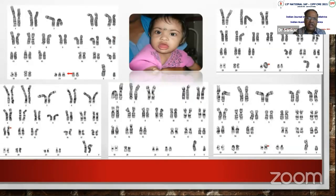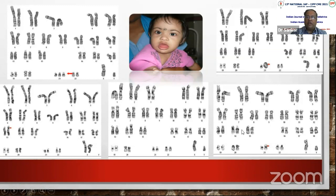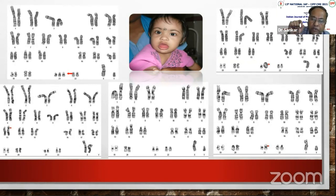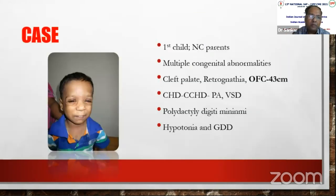While any pediatrician can clinically diagnose Down syndrome, karyotyping reveals important distinctions. There are various types of chromosomal abnormality: classical trisomy 21, non-disjunction trisomy 21, 13;21 translocation, 14;21 translocation, 21;21 translocation, and ring 21. All of these phenotypically show Down syndrome and cannot be differentiated by clinical examination alone — karyotyping is needed to guide proper genetic counseling.